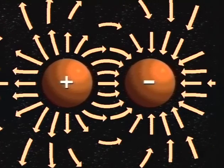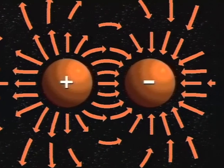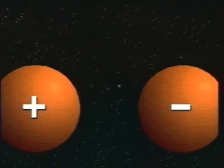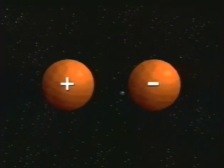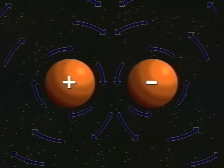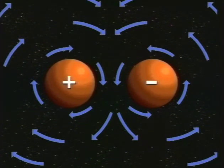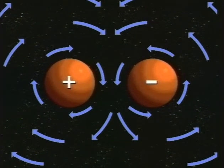If we take the two static electric chargers with their electric fields and make them move, the electric field will change its nature. It will transform into a magnetic field. It is convenient to treat magnetism as a force on its own. However, it is well to keep in mind that it is really another form of electrostatic force.